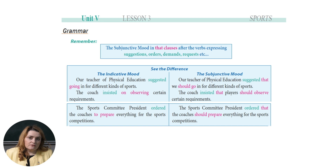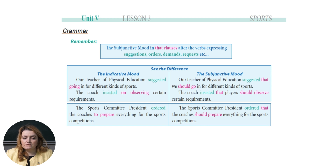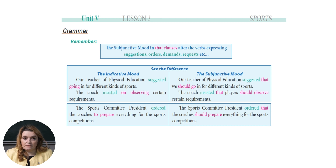So, let's have a look at the chart and see the difference. The indicative mood — we have an example there. I will read for you: 'Our teacher of physical education suggested going in for different kinds of sports.' Another example: 'The coach insisted on observing certain requirements.' Remember, that was the indicative mood. Now let's look at the other column — the subjunctive mood.